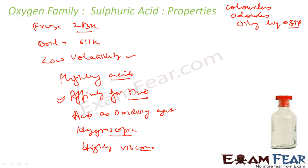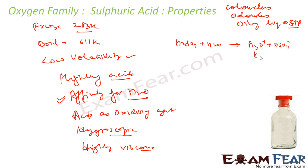Let's talk about how sulfuric acid behaves. When it reacts with even a little bit of water, it forms H₃O⁺ ions and HSO₄⁻. It is a very, very strong acid. The Ka value is very high — almost 10³ — which is the dissociation constant for this first step.